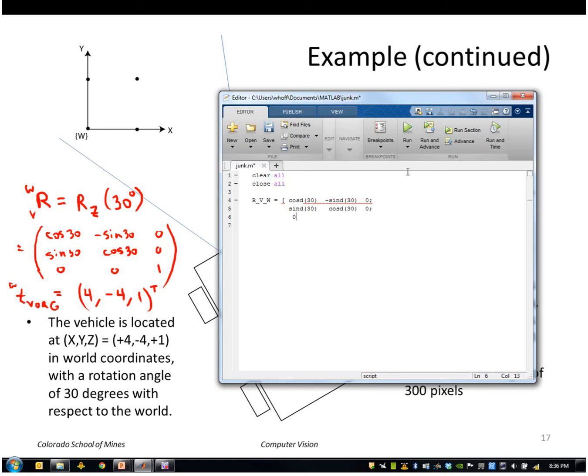And then zero, zero, one. The translation of the vehicle's origin in the world is 4, -4, 1.